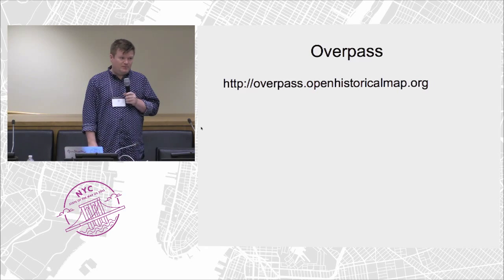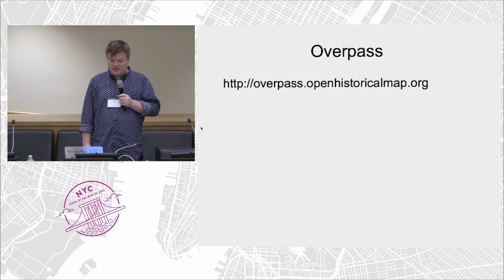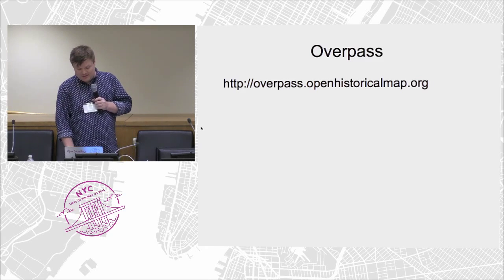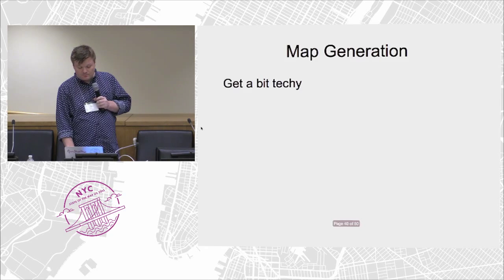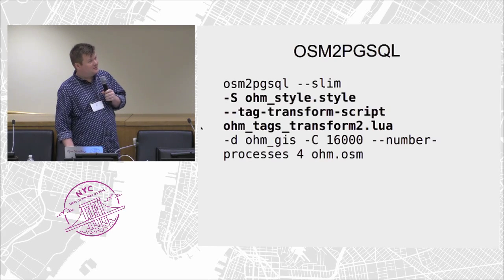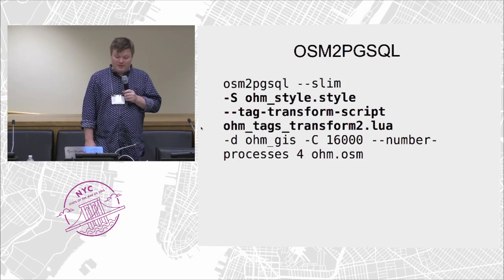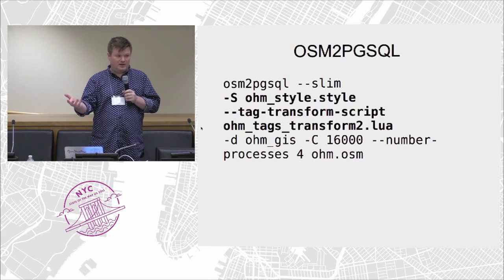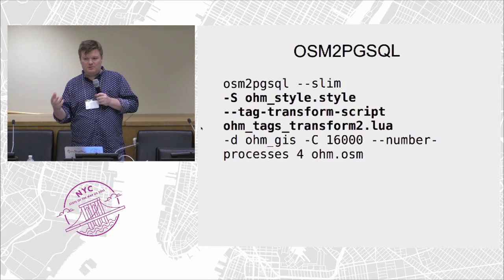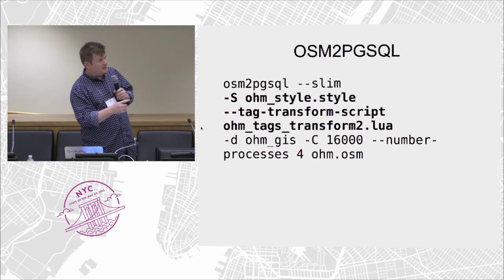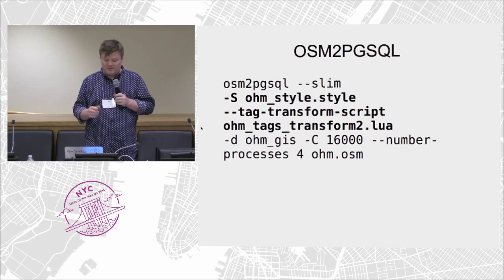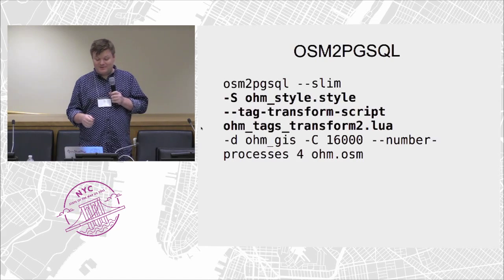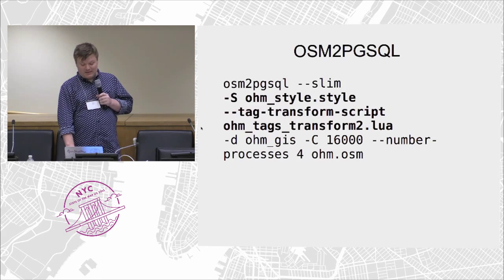Overpass uses the generated planet. There isn't much customization to that yet in terms of date range queries. Map generation is where we get more technical. OSM2PGSQL is a program which gets OSM data — in our case OHM data — and puts it into another database suitable for rendering maps. We're using a custom stylesheet (OHM style) and also a custom tag transform script. There aren't many tag transform scripts out in the wild, and this is a good use for one.